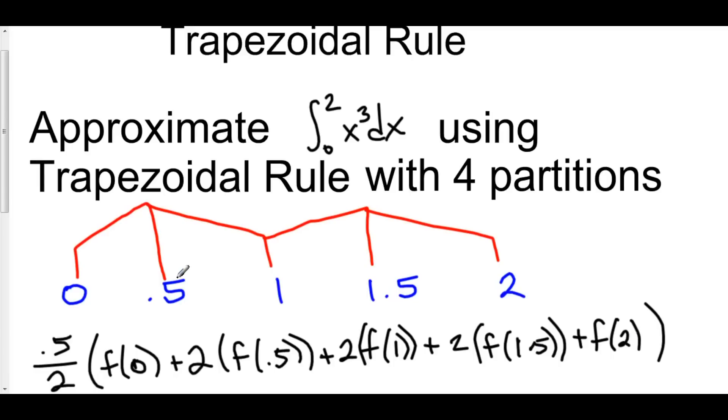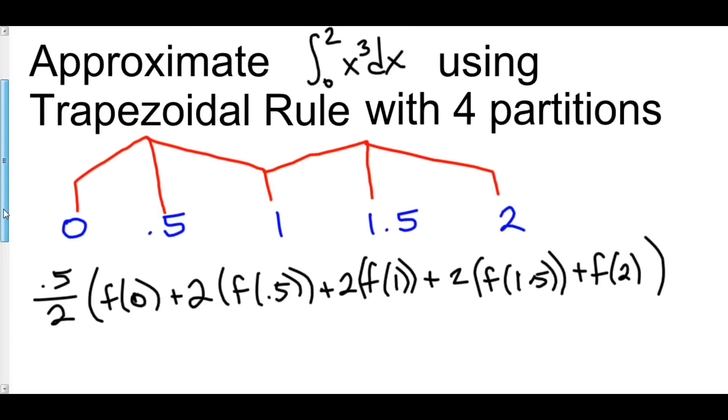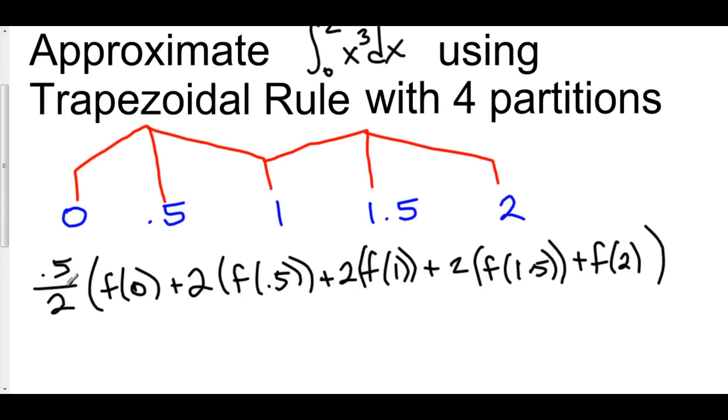And when I multiply the sum of all of those times 0.5 over 2, this is 4.25. And that is the approximation of the area under the curve of x cubed using trapezoidal rule with 4 partitions.